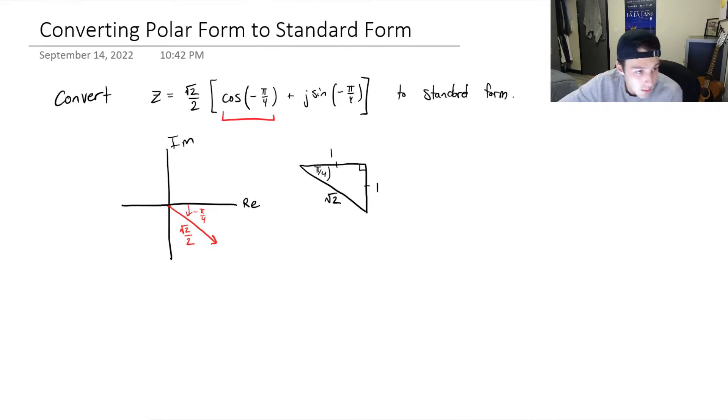And clearly from the Argand diagram, we have scaled this by a half, so let's just divide these by half. So that's going to be √2 over 2, this will be a half, this will be a half.